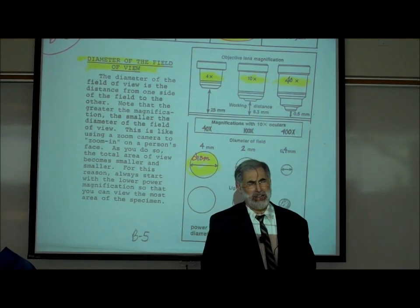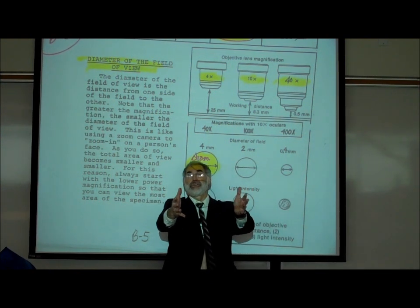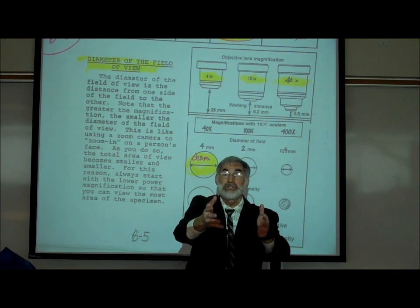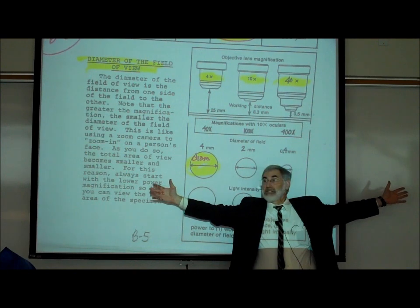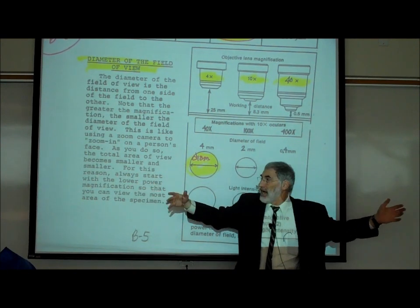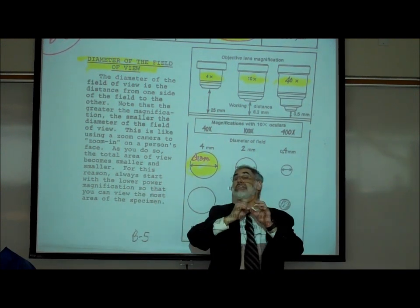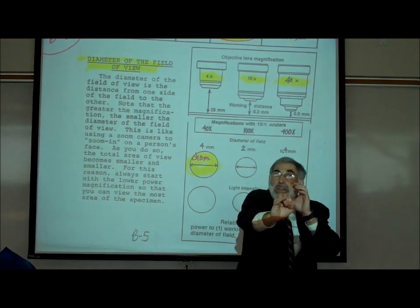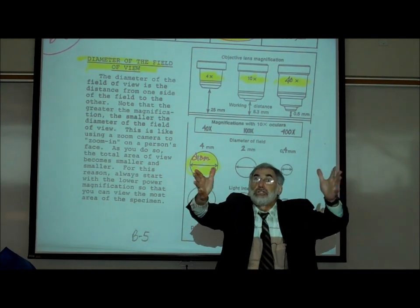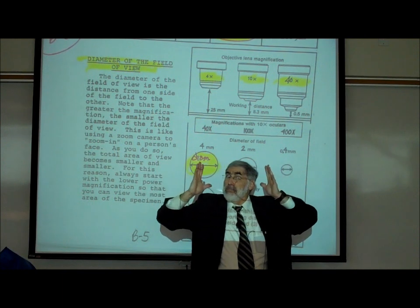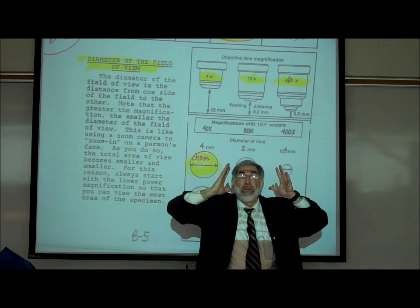If you're increasing the magnification, why does the diameter get smaller? Imagine you have a zoom camera. With a wide angle shot, you can see everything. As you increase the magnification and zoom in, you're actually looking at a smaller area — you've just made that smaller area appear big.